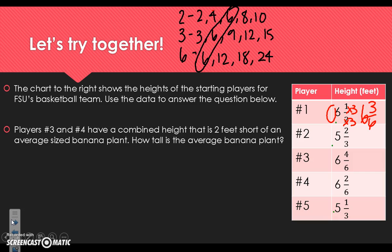Let's look at the second one: 5 and 2 thirds. We need to go back and look at our multiples — what times 3 gives me 6? That's 2. So we're going to multiply our denominator and our numerator both by 2. The whole number stays the same. 3 times 2 is 6, and 2 times 2 is 4. So now we have 5 and 4 sixths.